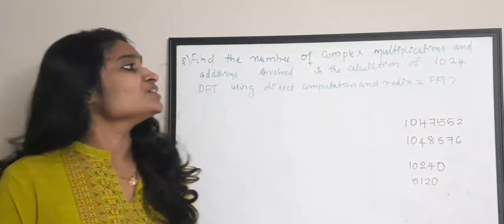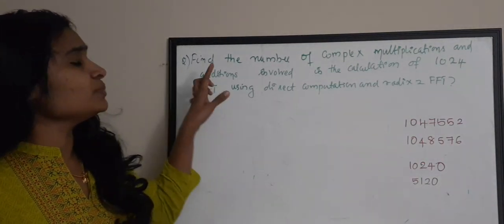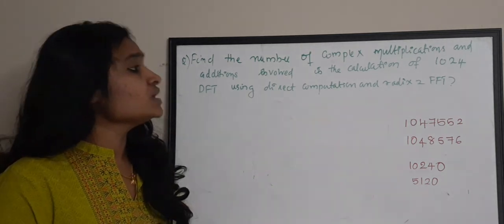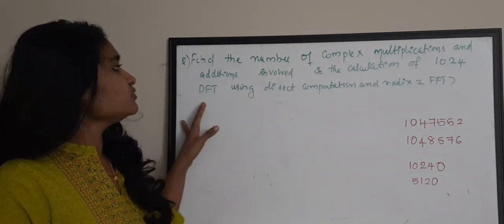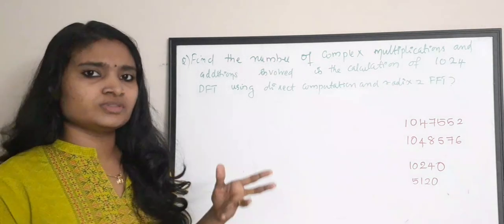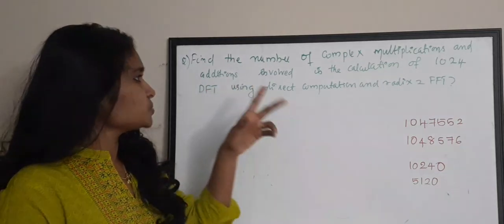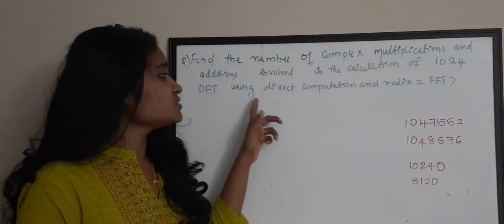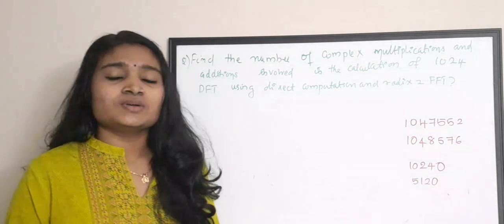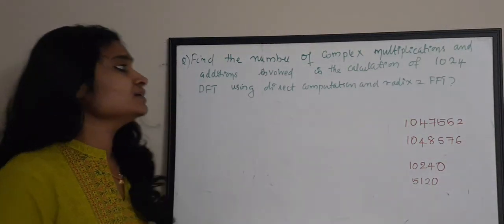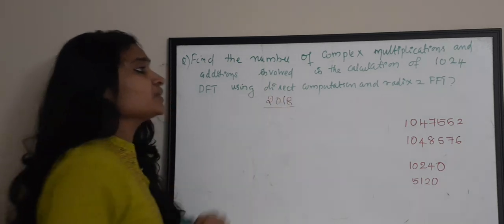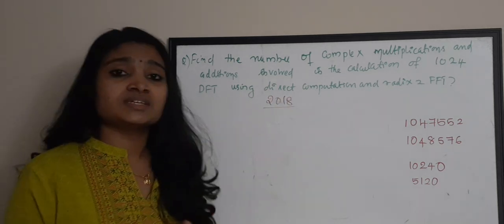The first question is: find the number of complex multiplications and additions involved in the calculation of a 1024-point DFT, where N = 1024, using direct computation and Radix-2 FFT. This is a question which has been asked in the 2018 DSP exam.